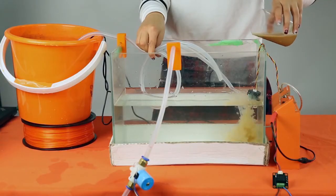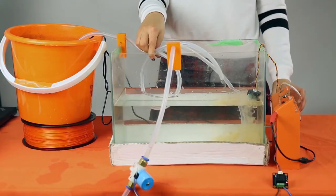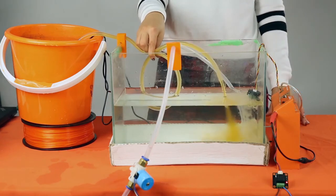Turbidity sensor is often used in water quality monitoring. This is an automatic water changing system based on the turbidity sensor.